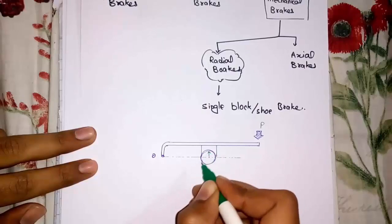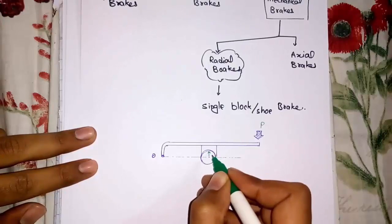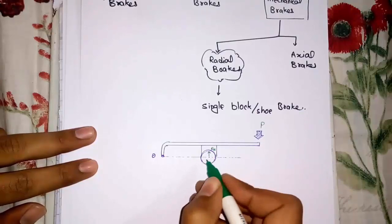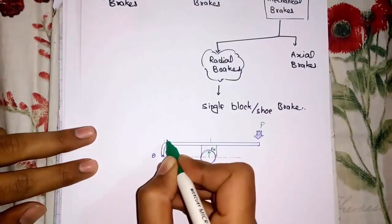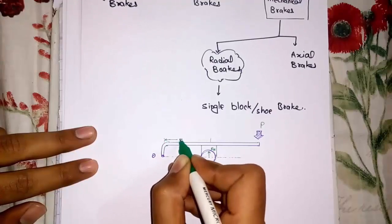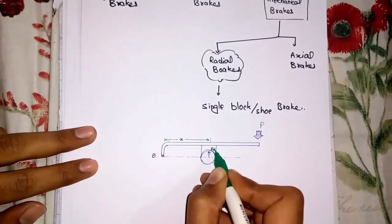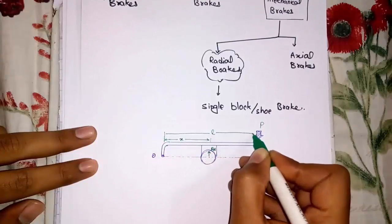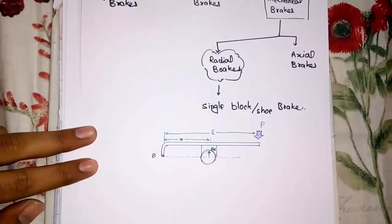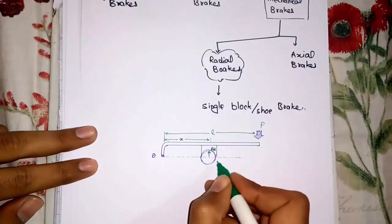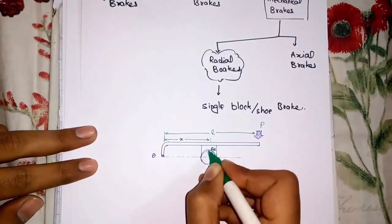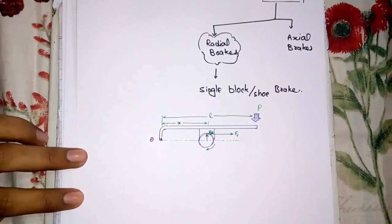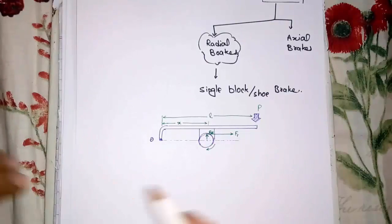Rn is the force along the radius of the wheel. It is the normal reaction force on the wheel, responsible for the brake — so called the braking force. The distance from the centre of the wheel to the point O is x. The distance from pivot point O to the externally applied force is L. If the wheel is rotating clockwise, then there would be a tangential force on the wheel in the direction of wheel rotation.